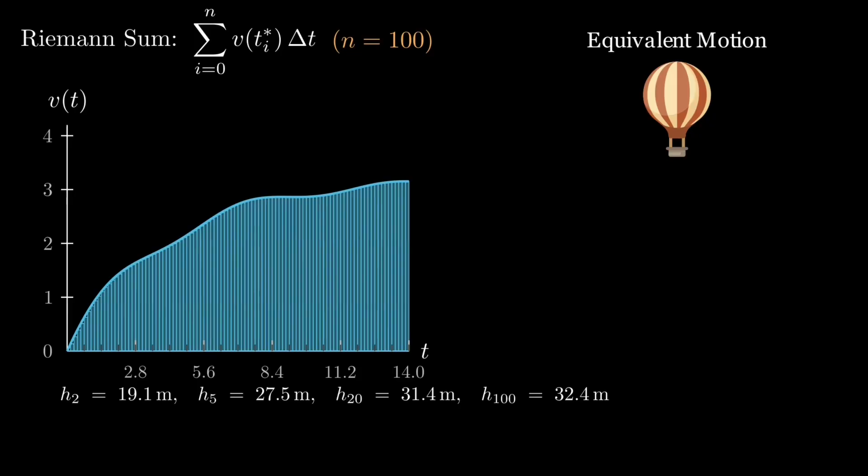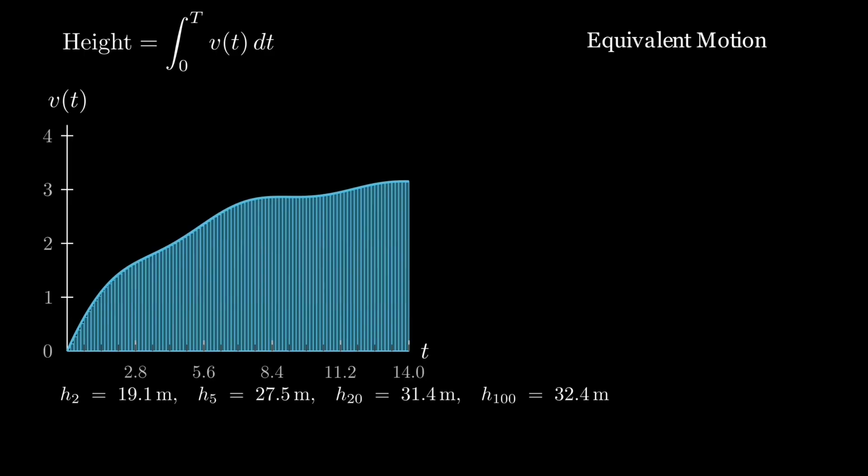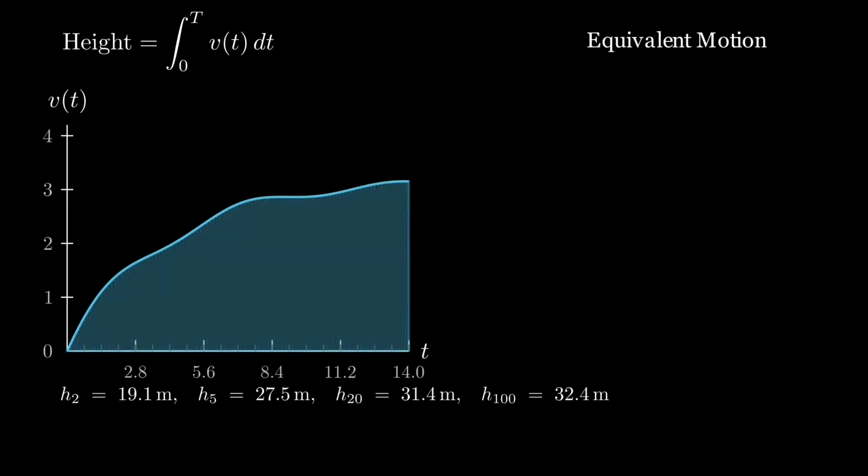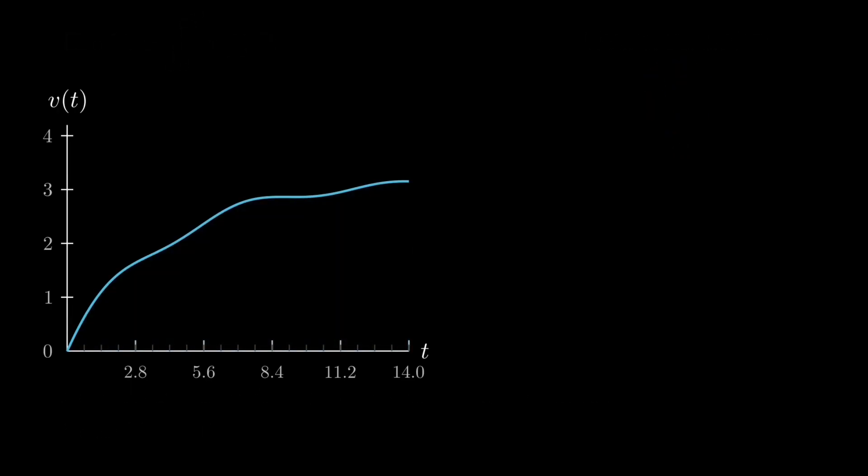What the rectangles are doing is simple. Each tiny interval contributes v times delta t meters of rise, and if you add them all, you get the total. In the limit, the step becomes continuous. The shaded area under v is the exact height gained, which is given by the integral of v dt over the interval 0 to t.